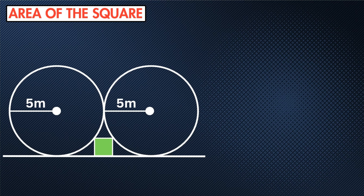Here we have a really nice question. Two circles with a radius of five are connected by a tangent line, and on that tangent line sits a square where the top two vertices are touching the circumferences of the circles. We want to find out the area of the square.